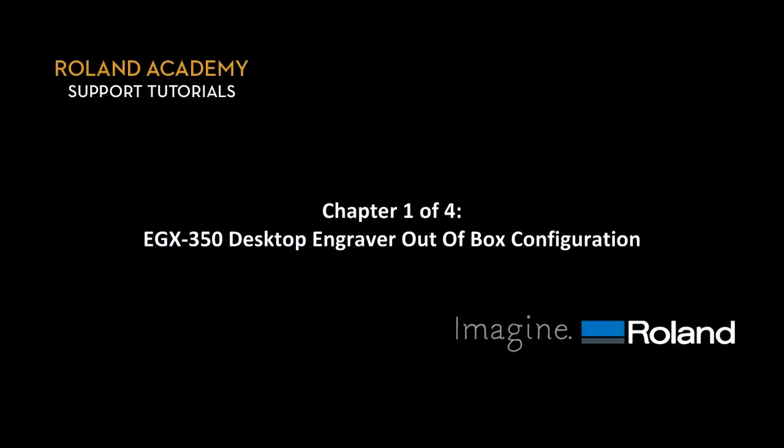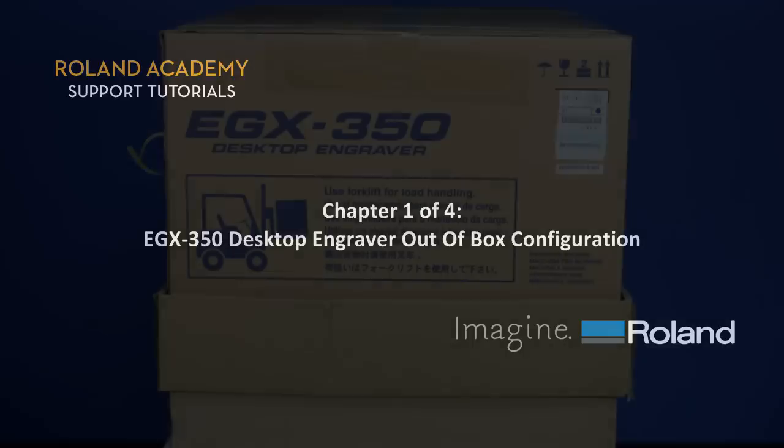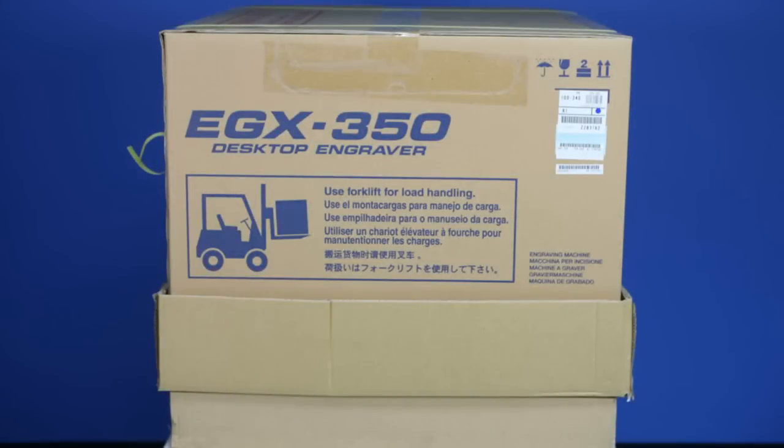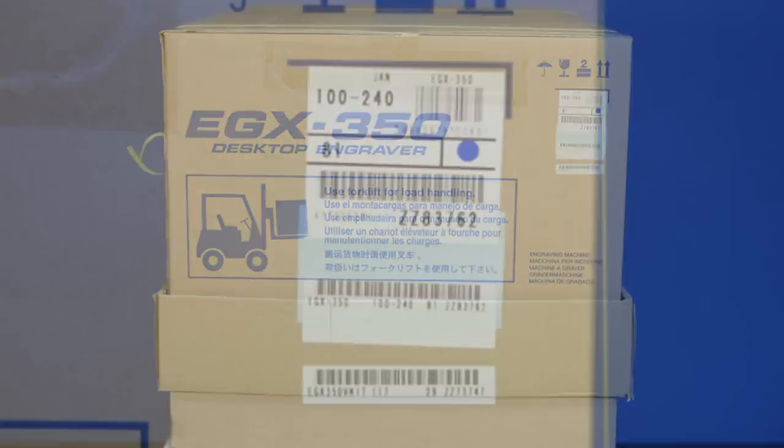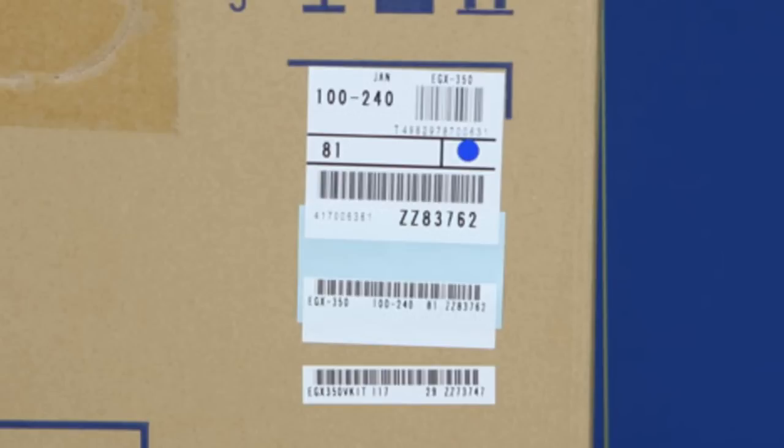Chapter 1 of 4: EGX-350 Desktop Engraver Out of Box Configuration. Prior to opening the box, make note of the machine's serial number and register your machine with Roland in case you need service and support.